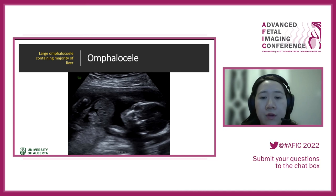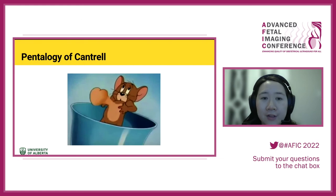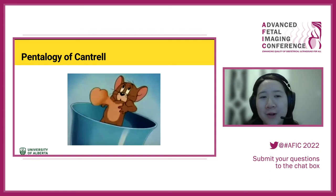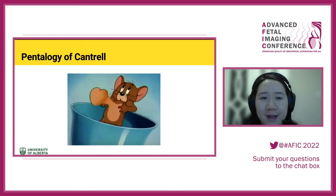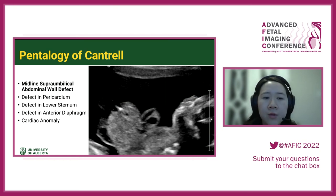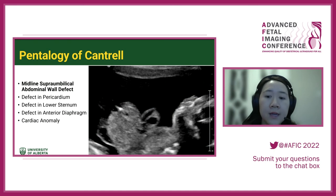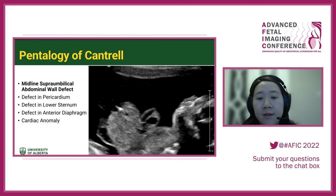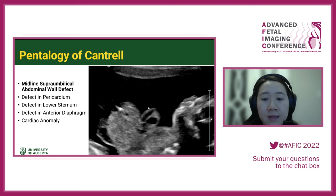Pentalogy of Cantrell: we're looking for five specific things — a midline supraumbilical abdominal wall defect, a defect in the lower sternum, a defect in the anterior diaphragm, intracardiac anomaly, and a pericardial defect. In the image on the right, you can see an omphalocele in the lower portion, and an extruded heart outside the fetal chest — that's the lower sternal defect.